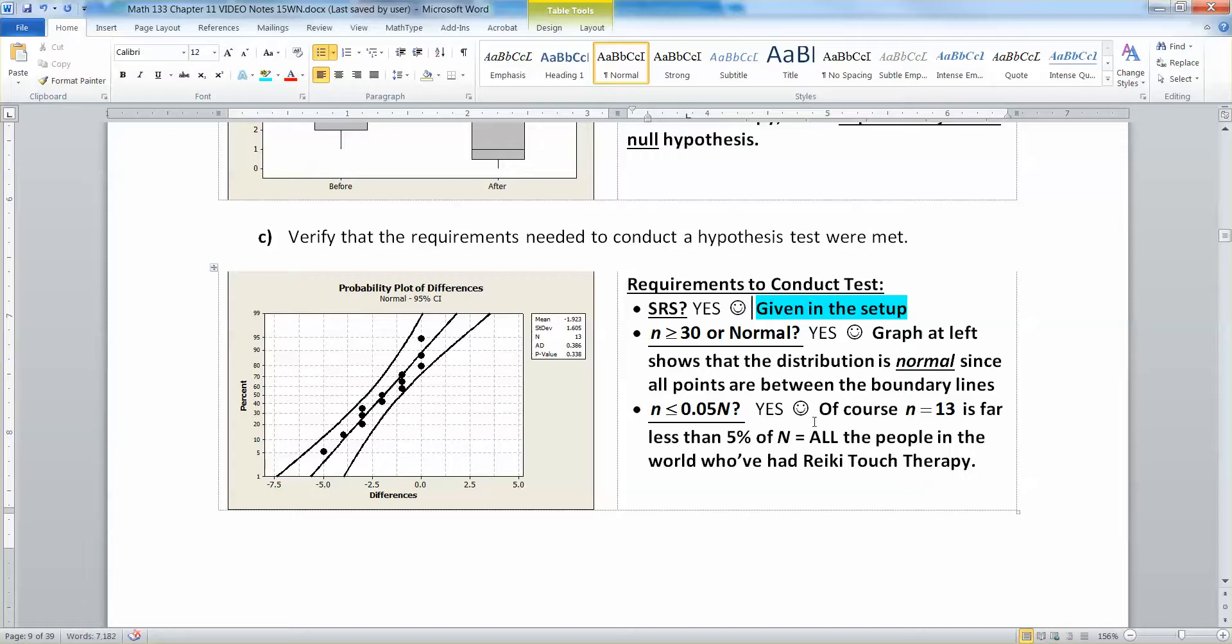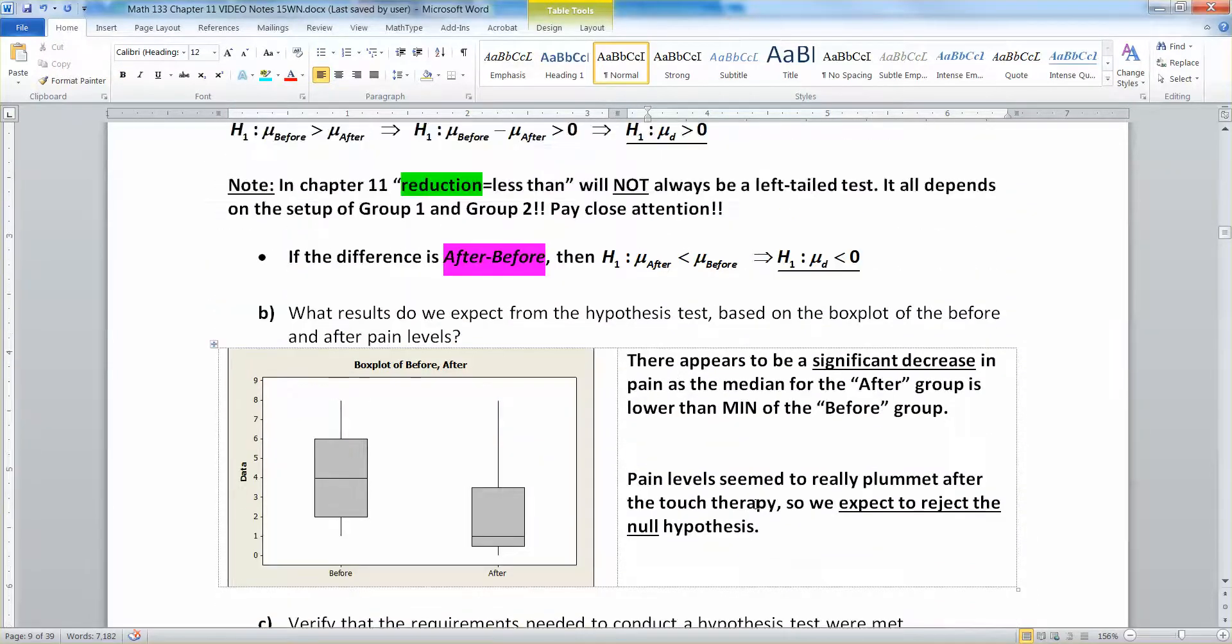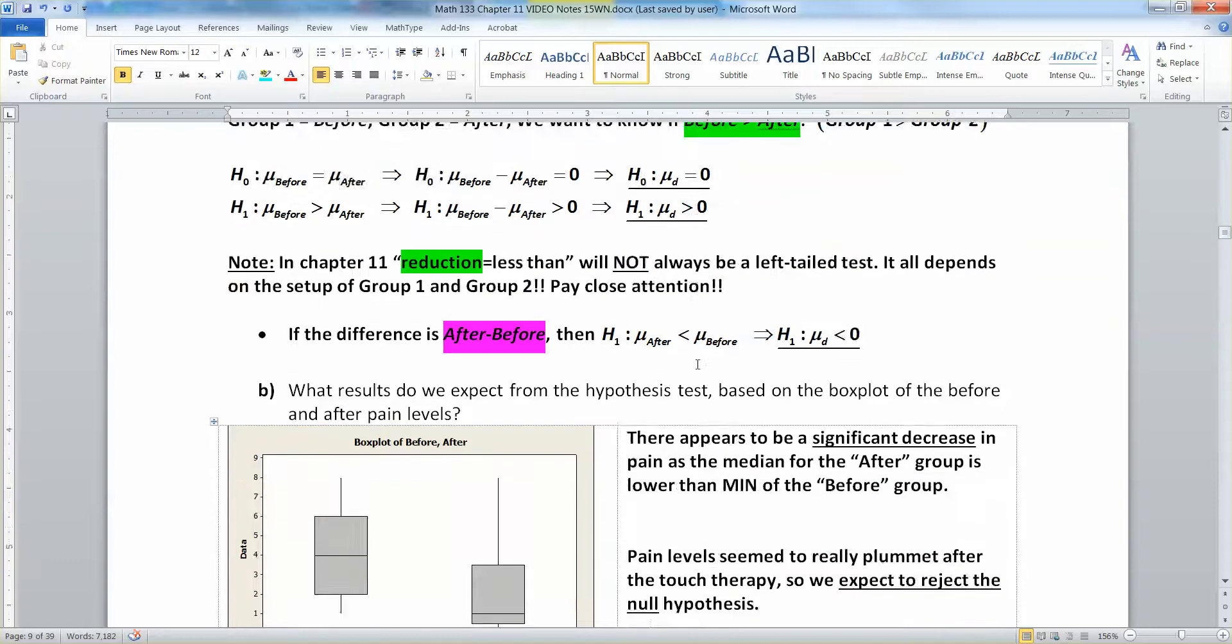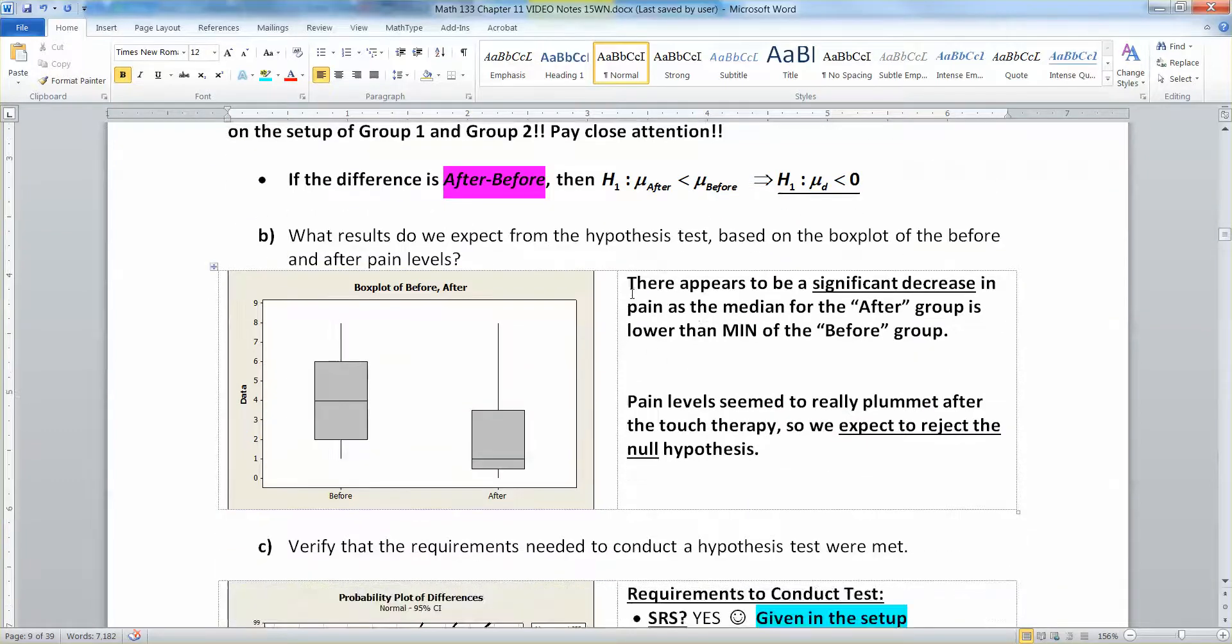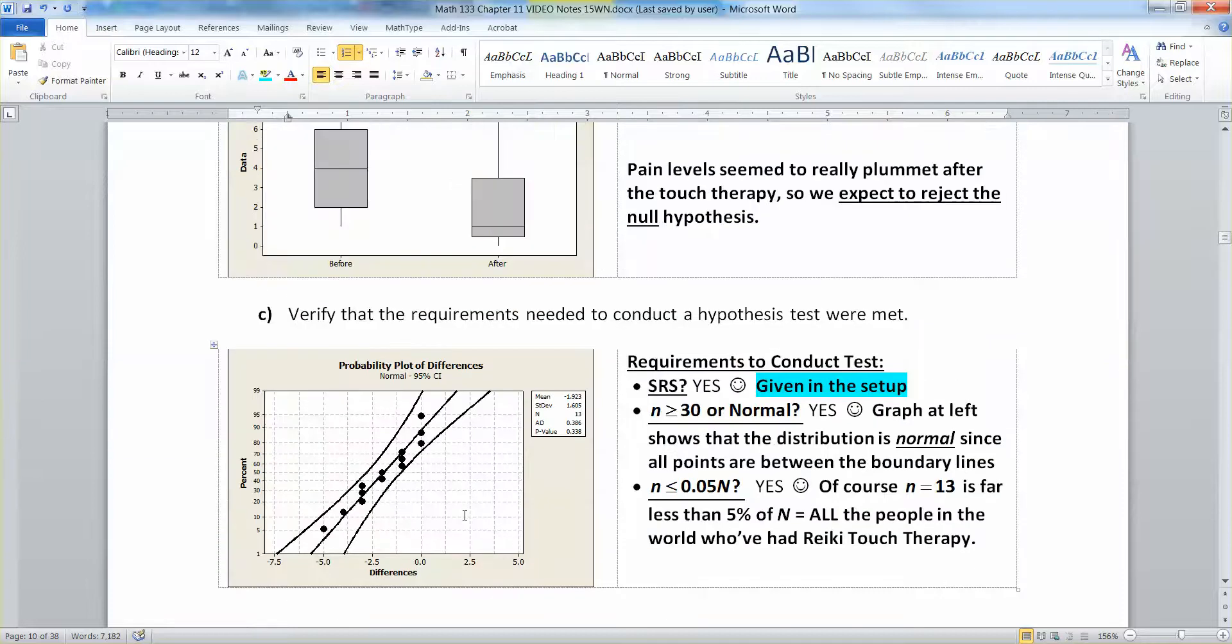If you were ever given capital N, like if you knew N was 5 million people, you'd stick in 5 million and find 5% of that, and 13 would be less. We've checked our requirements are met for conducting the test. We figured out the hardest part - our null and alternative hypotheses. We've also checked that we think we're going to be rejecting the null hypothesis. But we'll have to wait for the next video to actually do the test because it requires so much time I can't fit it into this video.